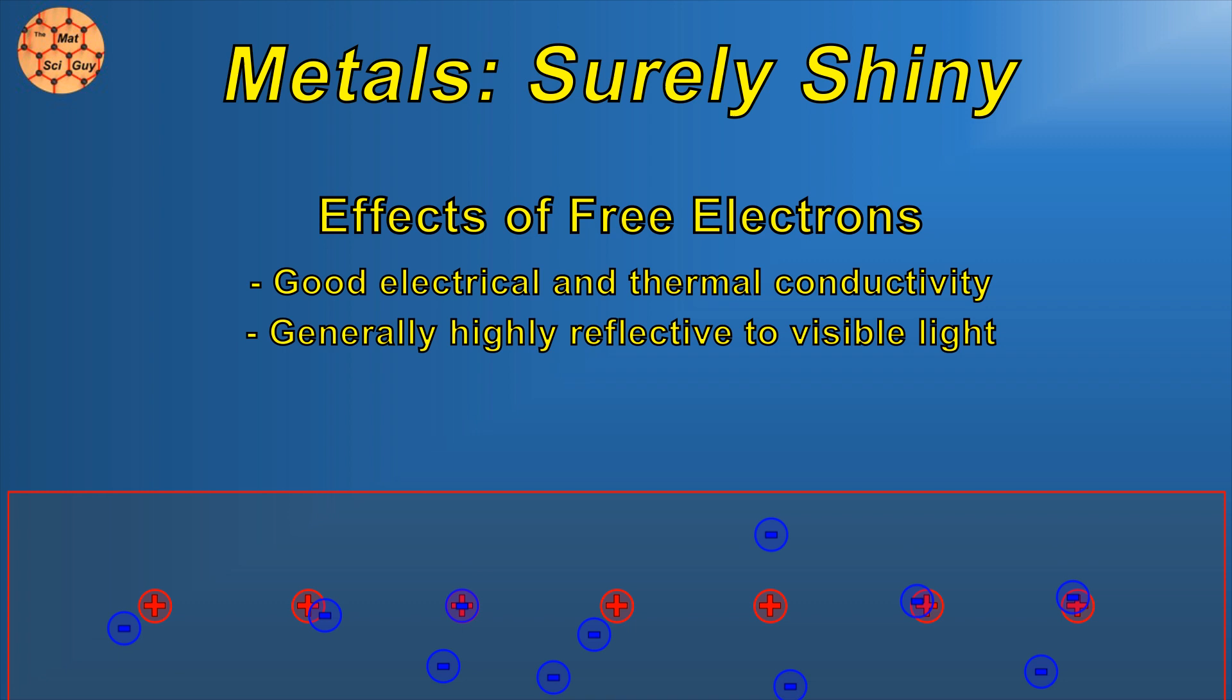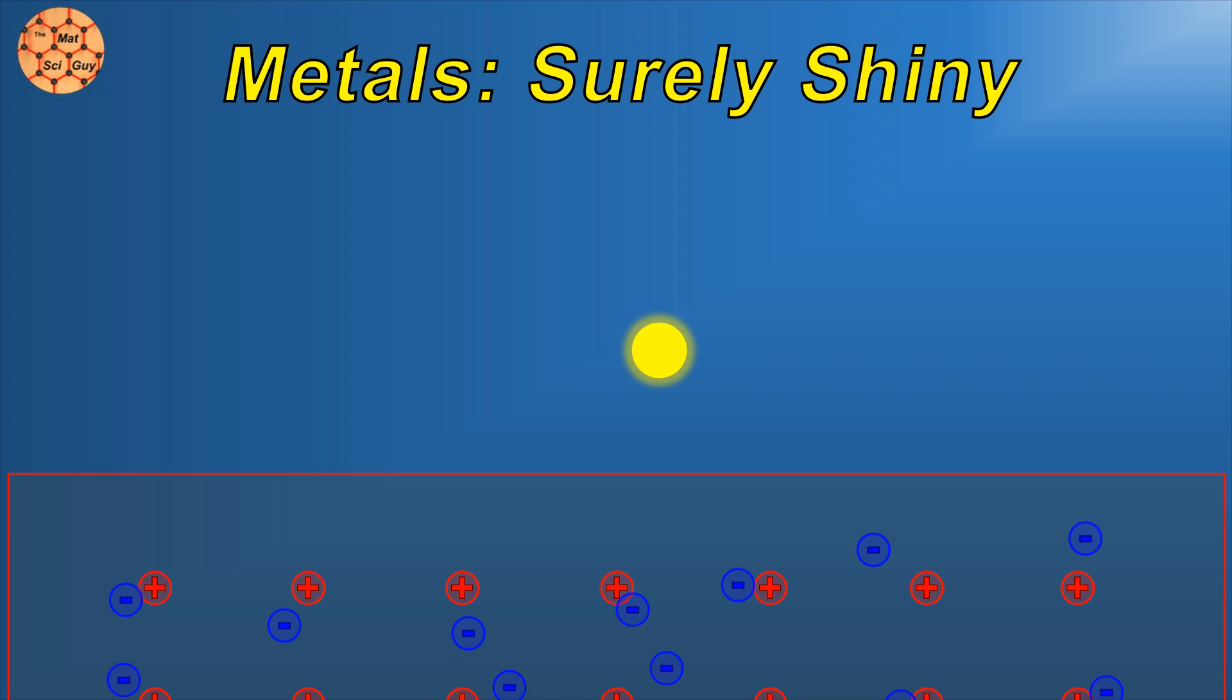Basically, our photon is likely to interact with one of these roaming electrons almost immediately once he enters the material, and his journey will end pretty quickly.